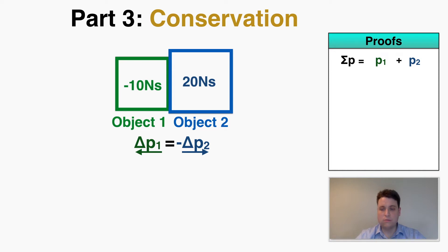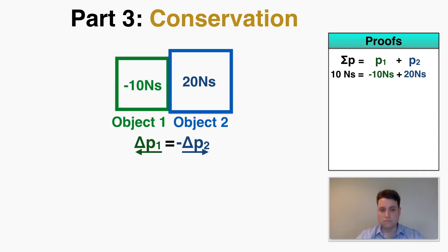I want you to observe something about the total momentum of the two objects added together. I'm starting with a momentum of negative 10 and a momentum of positive 20, so the total momentum between these two blocks is 10 Newton-seconds. I'm now going to imagine that object one experiences an impulse of 30 Newton-seconds to the left, and I'm considering left to be positive, so that's a positive impulse.